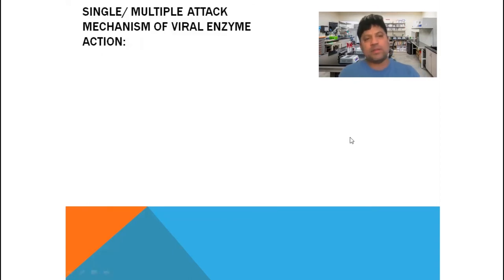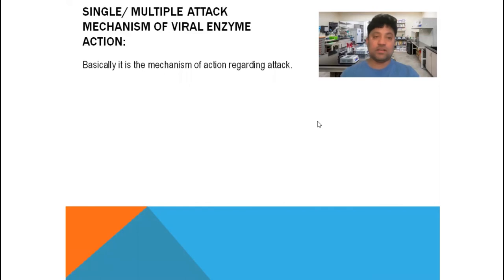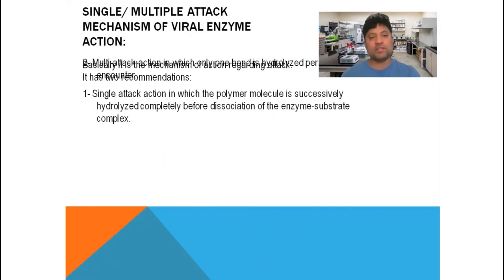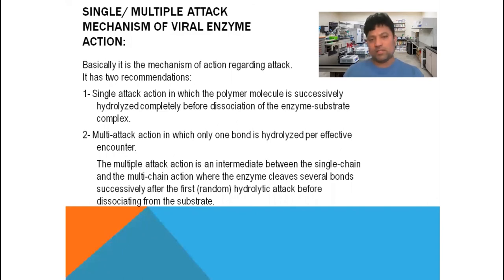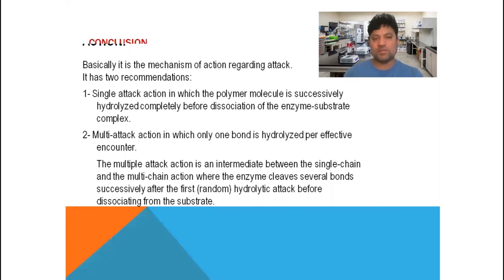Now I would like to talk about the single and multiple attack mechanism of viral enzymes. Viral enzymes attack by two ways — a single or one-time attack, or a multiple attack. In the single attack action, the polymer molecule is completely hydrolyzed before dissociation of the enzyme-substrate complex. In the multiple attack action, only one bond is hydrolyzed per effective encounter. The multiple attack action is intermediate between single-chain and multi-chain action, where the enzyme cleaves several bonds successively after the first random hydrolytic attack before dissociating from the substrate.